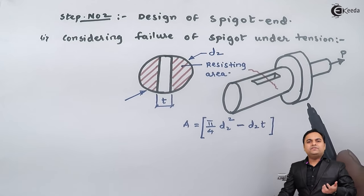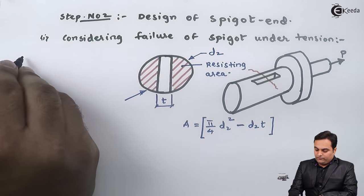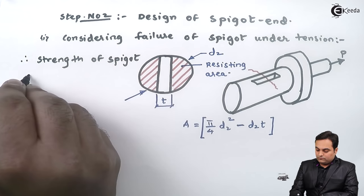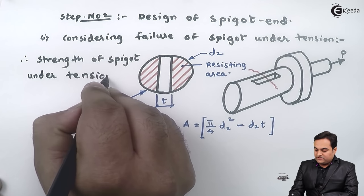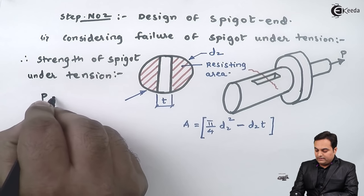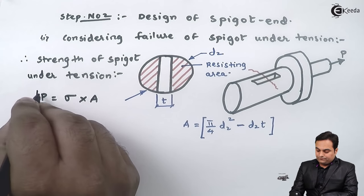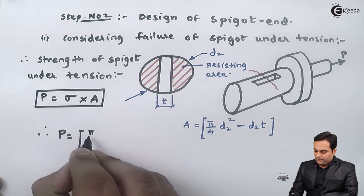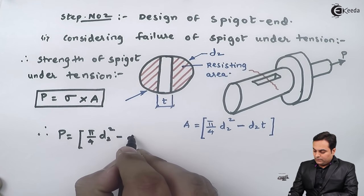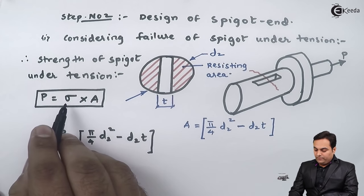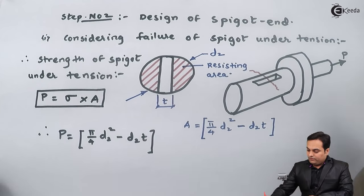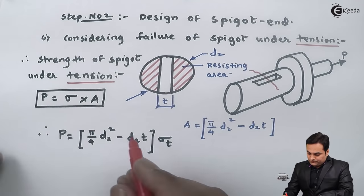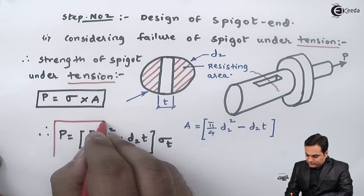The strength of spigot under tension — strength is nothing but the load it can resist, which is stress into area. Therefore load P equals pi by 4 times D2 squared minus D2 into T, multiplied by tensile stress. This is equation number two, from which D2 or T — that is, either the outer diameter of the spigot or thickness of cotter — can be calculated.